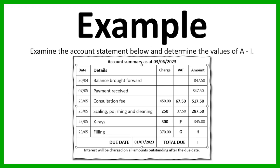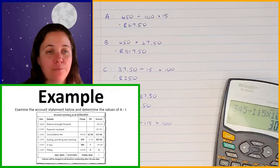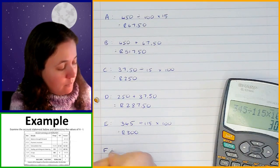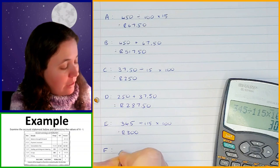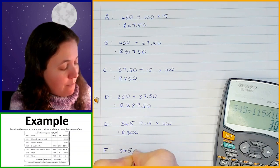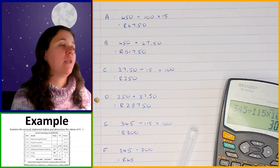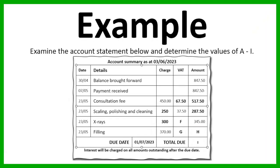Then we can work out F. Since I know the total (R345) and the charge (R300), I can simply subtract to get F: 345 − 300 = R45, which is the VAT amount for the x-rays.